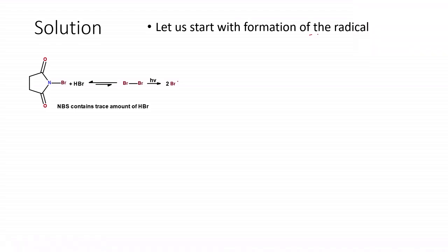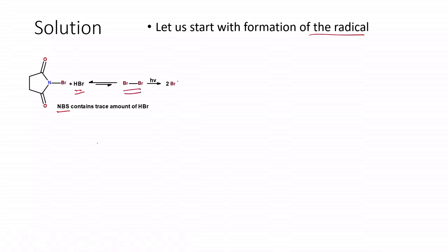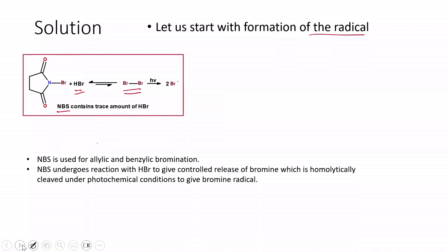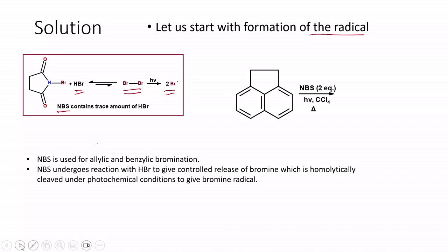In the first step, we are looking at radical formation. NBS is N-bromosuccinimide, and the commercially available N-bromosuccinimide contains a trace amount of HBr. NBS as such does not undergo any reaction, but the presence of a trace amount of HBr in the NBS reagent is responsible for initiation of the reaction. This HBr reacts with NBS to give a bromine molecule.